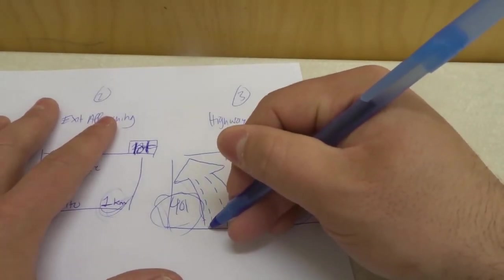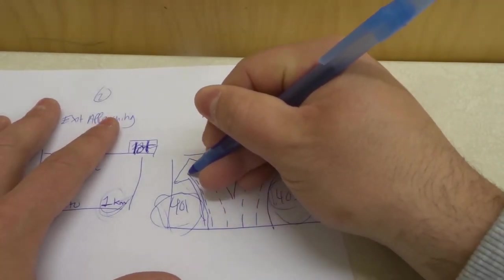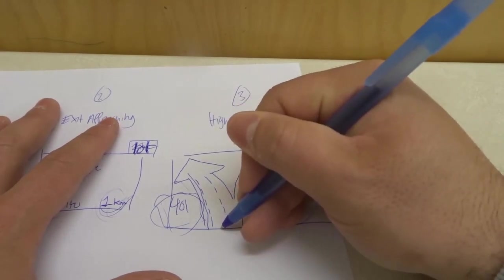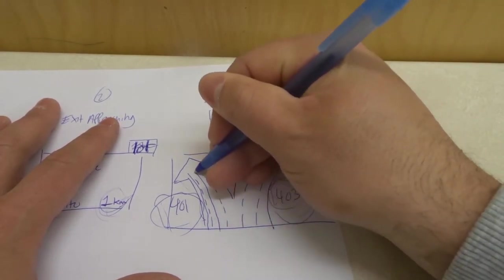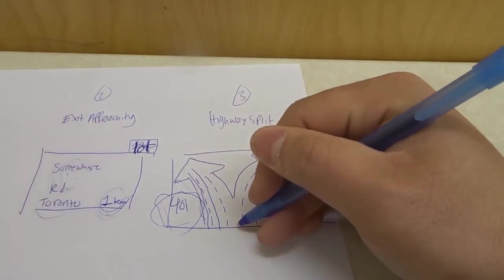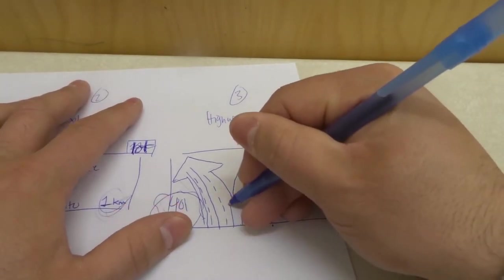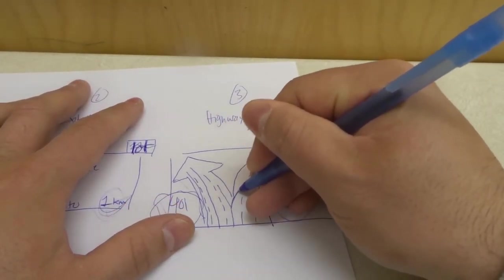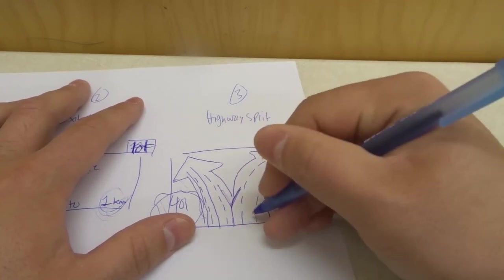And in this case, so the left lane as you can see right here will go only onto the 401. Second lane from the left only onto the 401. Third lane from the left will go either onto the 401 or 403. You can go either option with that lane.